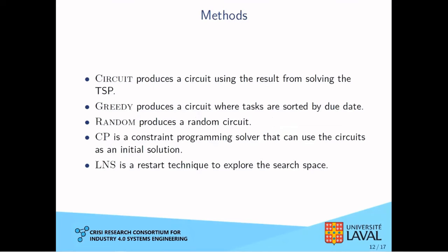We tested two basic heuristics: the circuit method uses a TSP solver to produce a circuit to generate a solution, while greedy simply sorts tasks by due date. Both heuristics are quick to compute but won't give the optimal solution. To fairly compare these to a CP solver, we introduced the random circuit, used as a branching heuristic to set the values of the N array. Compared to heuristics, search heuristics explore the whole tree and will eventually find the best solution.